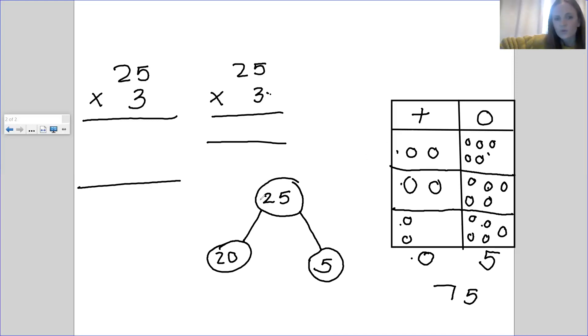With this one, where we split them up, you are timesing this one by three, and this one by three, and then you're adding them together. So 5 times 3 is 15. And then 20 times 3 is 60. You would add them together and get an answer of 75.